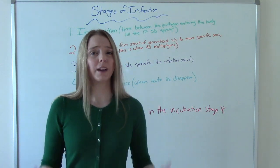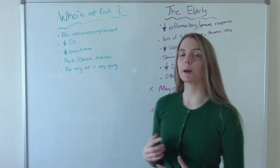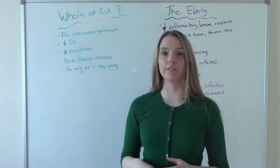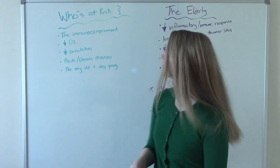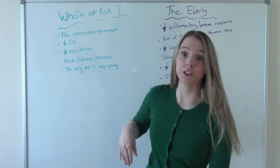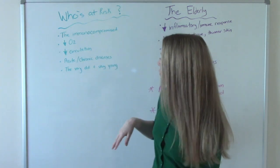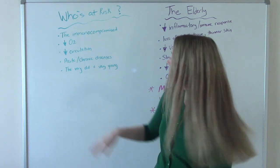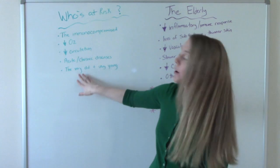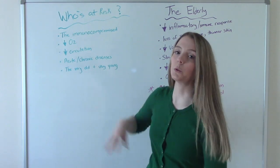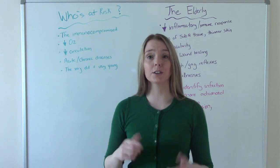Now let's talk about who's at risk. The immunocompromised - this could be somebody on chemotherapy, somebody recovering from an illness or a surgery, the elderly and babies. People with low oxygen saturation in their body or people with poor or decreased circulation. Those who have acute or chronic diseases going on. And the very old and the very young. Now I want to talk specifically about the elderly population, because when we hear about people getting sick, a lot of times we hear about it affecting the elderly the most.